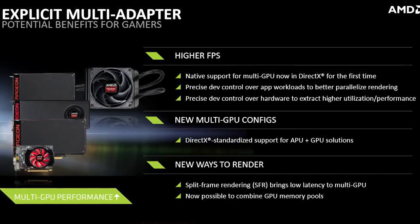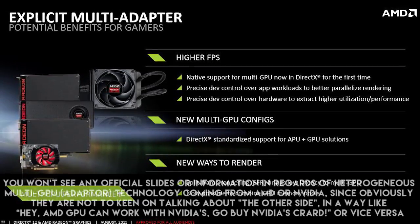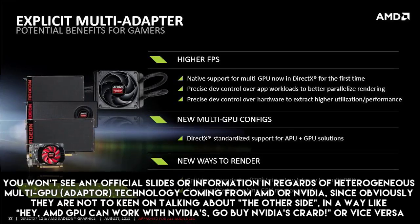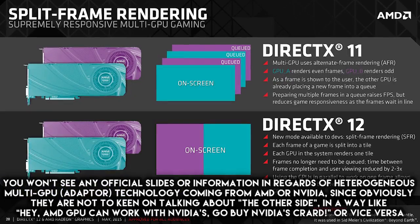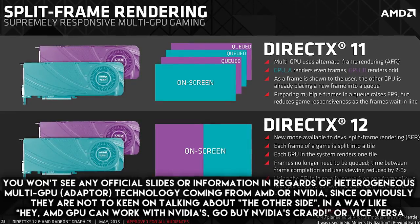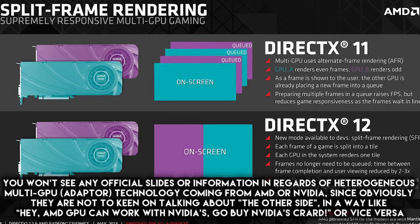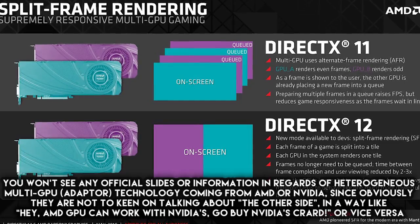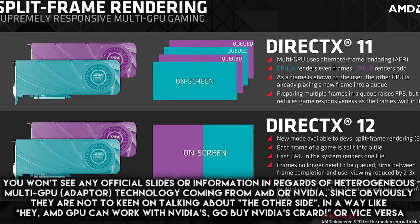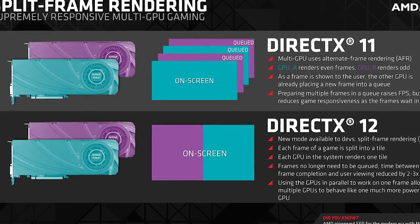Instead of using traditional SLI or Crossfire links, DirectX 12 has something called heterogeneous explicit multi-GPU support, which basically eliminates their need. This means that game developers now have tools which enable them to simultaneously utilize different GPUs in the same system, without depending on having a GPU of the same brand, model or even VRAM size, with substantially less overhead, and without any need of using the official multi-GPU linking technologies like SLI and Crossfire.